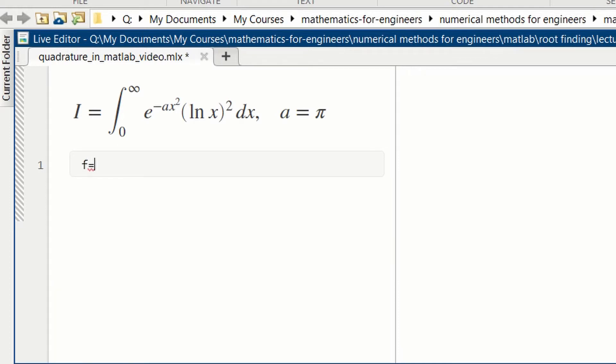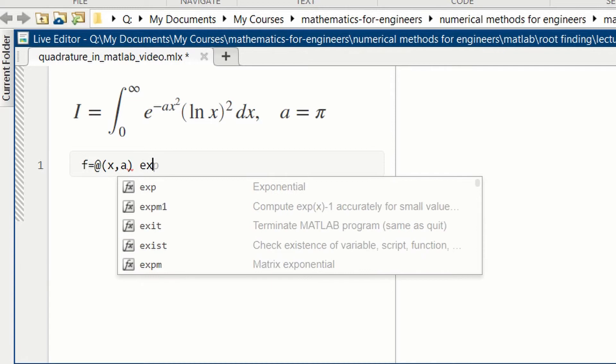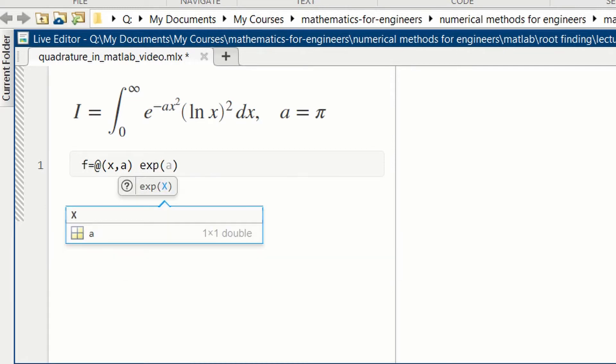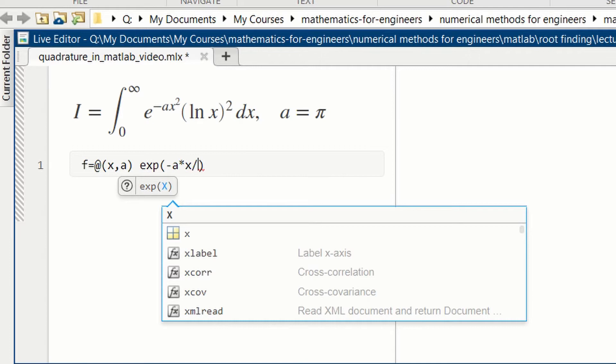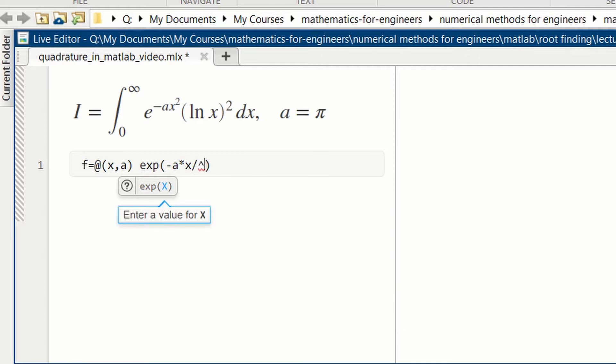This is going to be a function of both x and the parameter a. We have the exponential function exp of minus a, which is a constant scalar, times x squared. x will be a vector when we do the integration, so we need to use the dot hat operator to square it. So e to the minus ax squared.